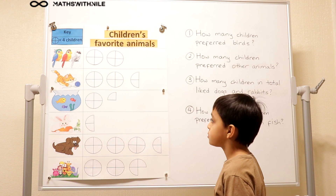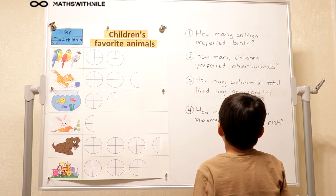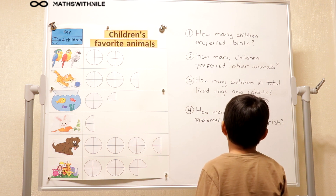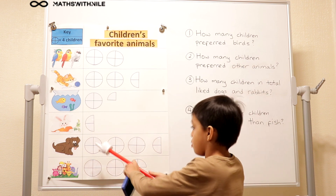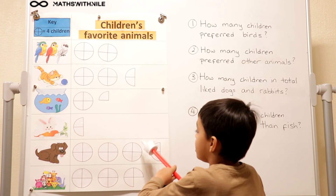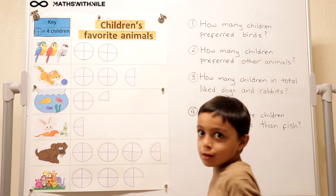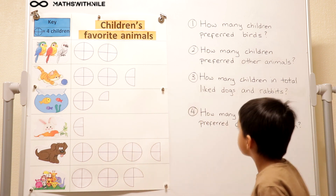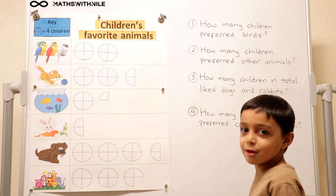What does the next question say? How many children in total like dogs and rabbits? So for dogs: one, two, three, four, five, six, seven, eight, nine, ten, eleven, twelve, thirteen, fourteen, fifteen, sixteen — 16 in total. How many people like rabbits? Only two. Very good. I like rabbits a lot.